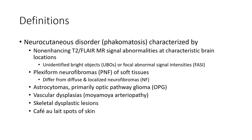NF1 is a neurocutaneous disorder characterized by non-enhancing T2 FLAIR signal anomalies at characteristic brain locations, with abnormal signal intensity. Features include plexiform neurofibromatosis of soft tissue, astrocytomas, optic pathway gliomas, vascular dysplasia, skeletal dysplasia, and café au lait spots of the skin.